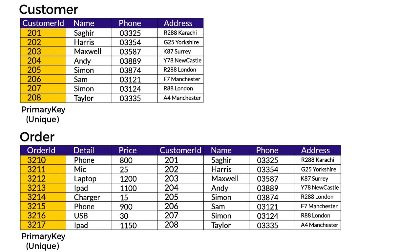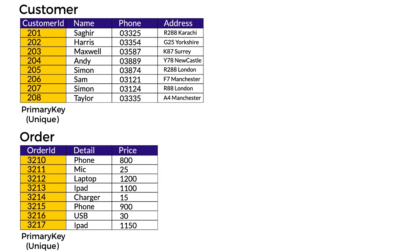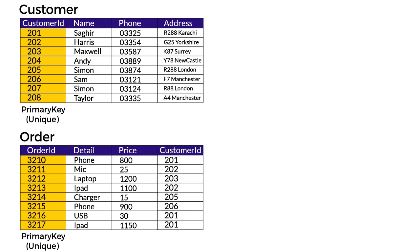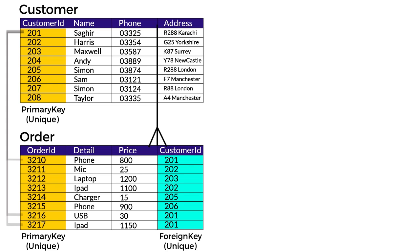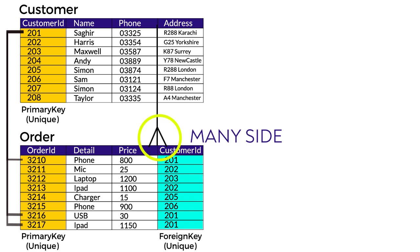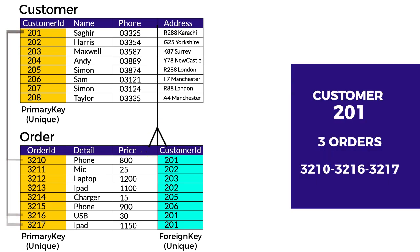In a one-to-many relationship, we make absolutely no change to the 'one' side, which is the customer table. We add a column to the 'many' side, which is the order table, taking the primary key of the customer table and adding it to the order table where it will act as a foreign key. Remember: primary key numbers cannot be repeated, but foreign key numbers can be repeated. That's how we create the link between one-to-many tables. The foreign key is the primary key of the customer table.